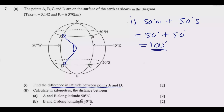If both points are in the north, you subtract — subtract the smallest from the largest. If both are in the south, you do the same. If they are on opposite sides, you add. That's the rule you need to follow. So the difference is 100 degrees.